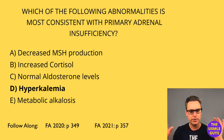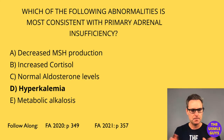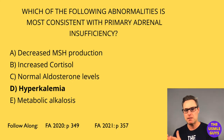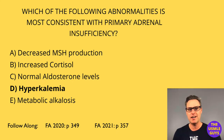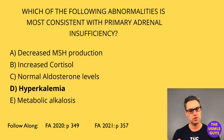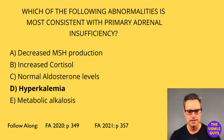Let's put primary versus secondary side by side. In primary, we see hyperkalemia, metabolic acidosis, and a drop in aldosterone. But in secondary, aldosterone is normal and potassium levels are normal — so they are very different with respect to their lab findings.